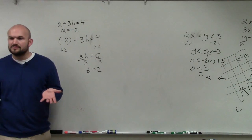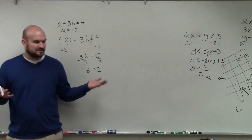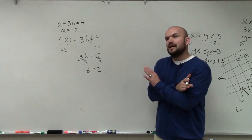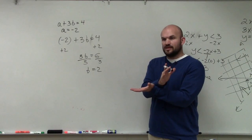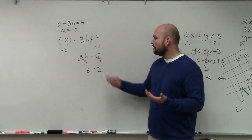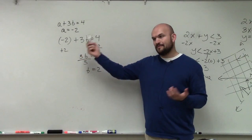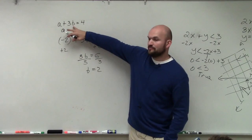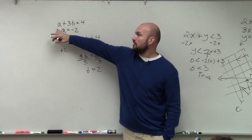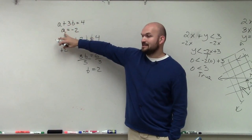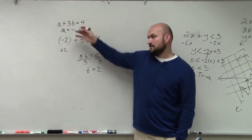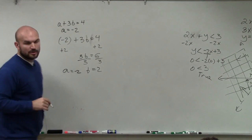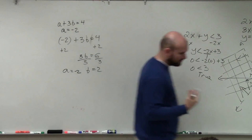The difference here is we're not just evaluating equations. Systems of equations are two lines — remember when we graphed them, they intersected at a coordinate point. So we're looking for the value of b and a that is true for both equations. In this case, a is already given, so we know b equals 2 and a equals negative 2.